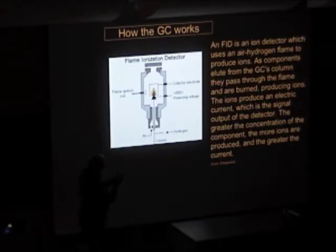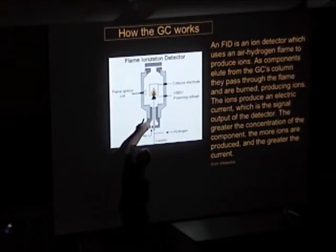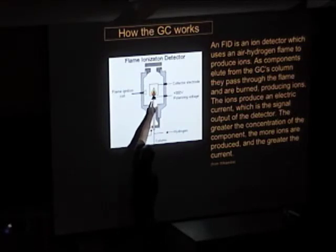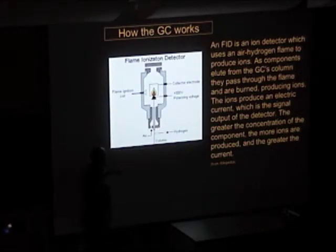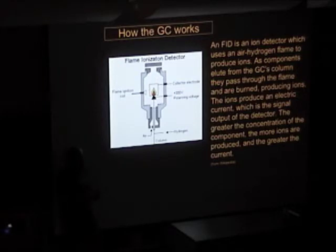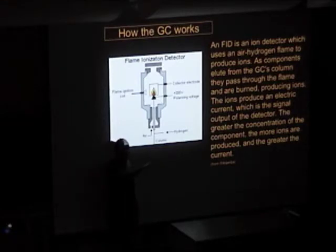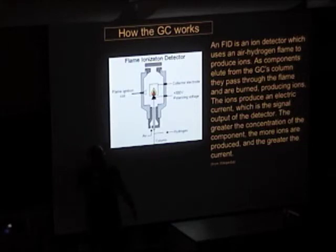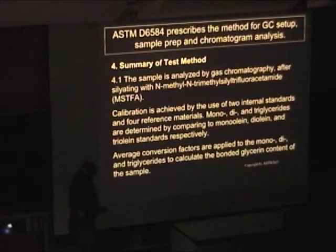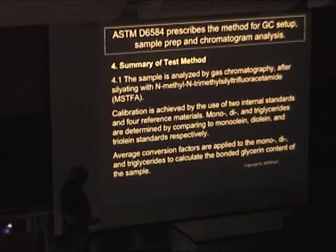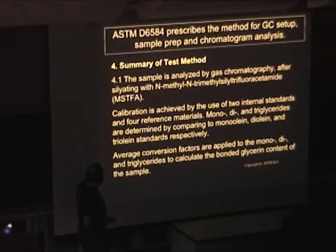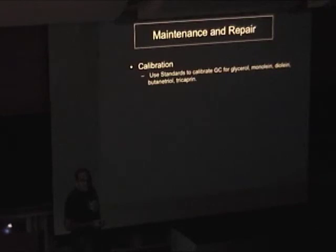The flame ionization detector: the gases come through, there's a little flame, it burns the material as it comes out in a magical chemistry sort of way. These create ions — it measures the difference in potential between the voltage and the collector, and it creates a peak. So if you inject heptane or methanol onto the column, it goes up and comes back down — flat line. When you put a sample of biodiesel in there, there's all kinds of stuff, and it makes all these funny curves. The test method is D6584.